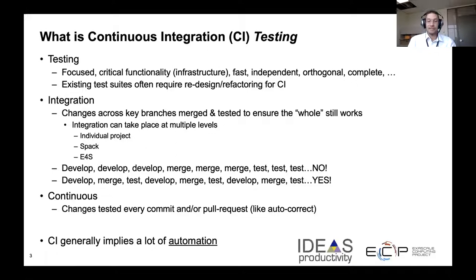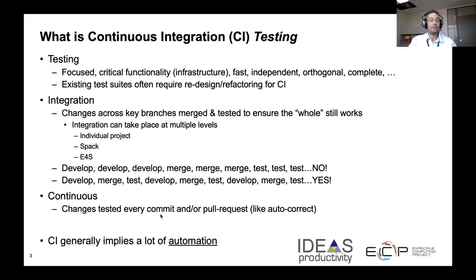It can be tedious to run the tests manually, and so CI generally implies that you're automating the running of the tests during the merge process. With GitHub integration, it's neat that it can happen on every pull request from outside collaborators and also on every commit where you push code to your repository yourself.